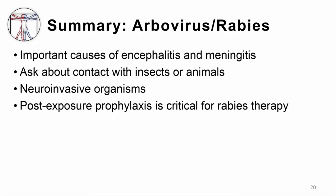In summary, arboviruses and rabies are important causes of encephalitis and meningitis worldwide. To determine whether these viruses are causing neurologic symptoms, you need to ask about contact or bites from insects and animals. These organisms directly invade the brain and cause symptoms. While there is no specific treatment for arboviruses, post-exposure prophylaxis — including rabies-specific immunoglobulin and vaccine — can prevent death if given in a timely manner.